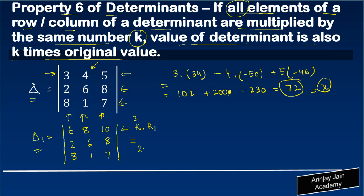It should be 2 times x, or 2 into 72, which is 144. So expanding across the first row we will get 6, 8, and 10.